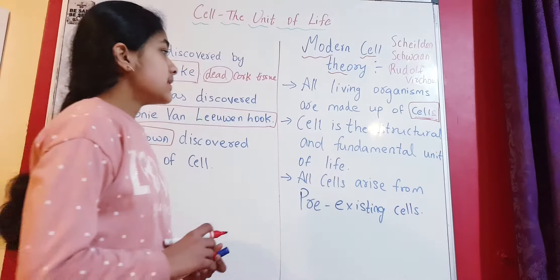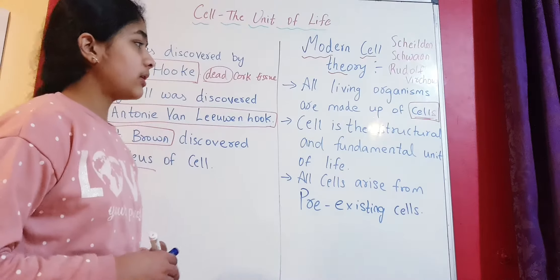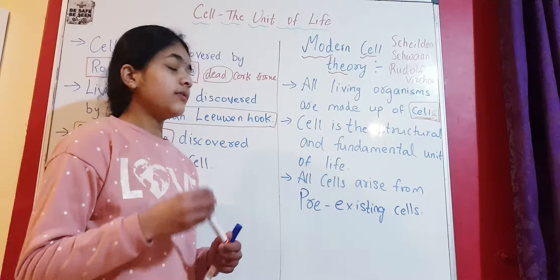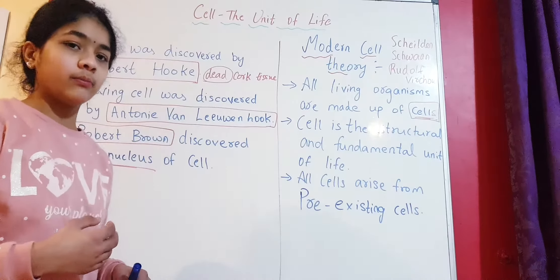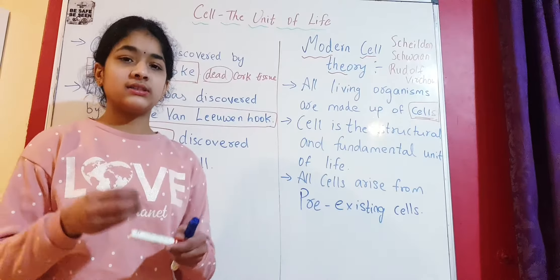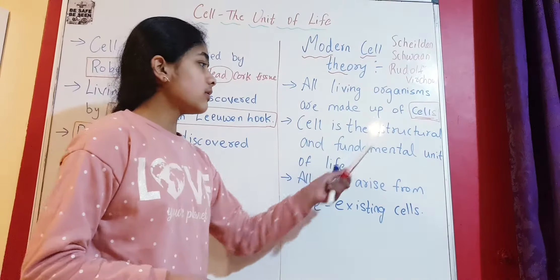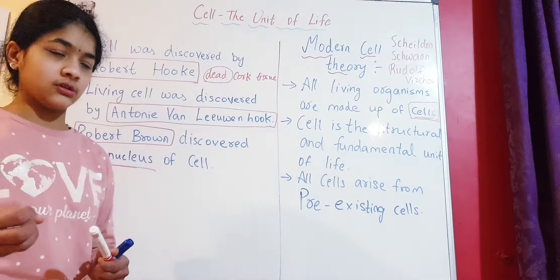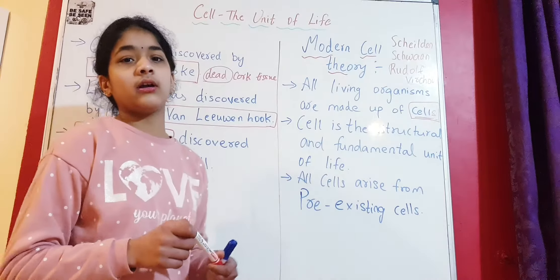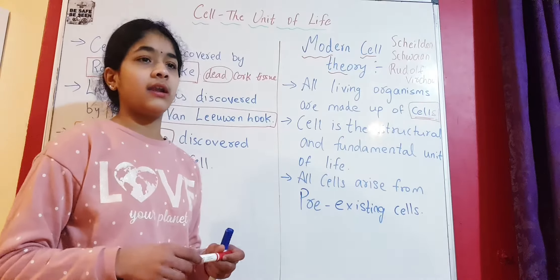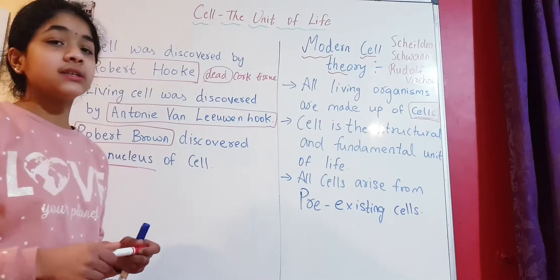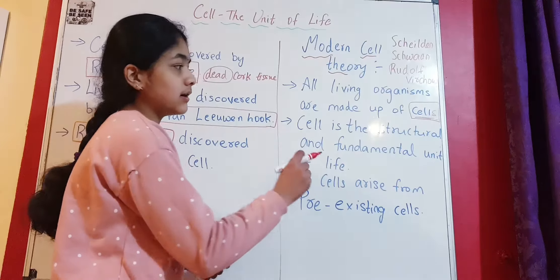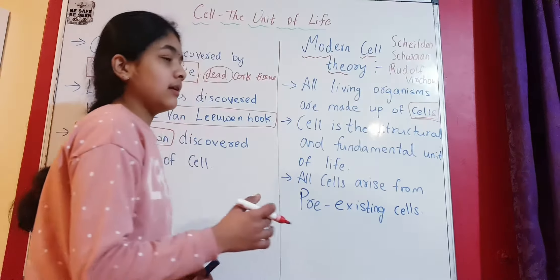The next point is: cell is the structural and fundamental unit of life. For example, digestion is a living process — it is the breakdown of complex food molecules into simple absorbable forms. The stomach is an organ that helps in digestion, but the cells of the stomach are doing the digestion — like goblet cells and mucus cells. These cells form a tissue, and all tissues form an organ performing the function of digestion.